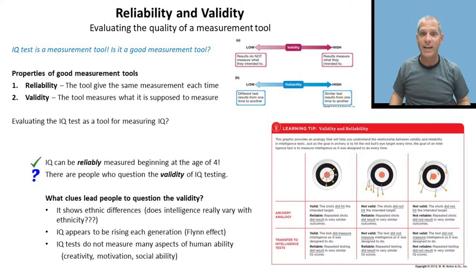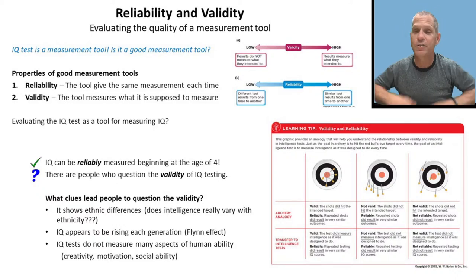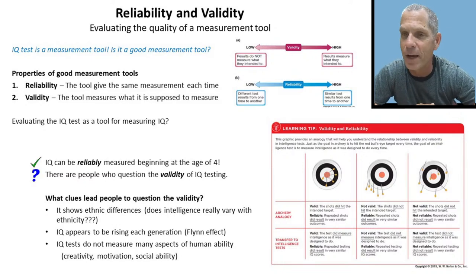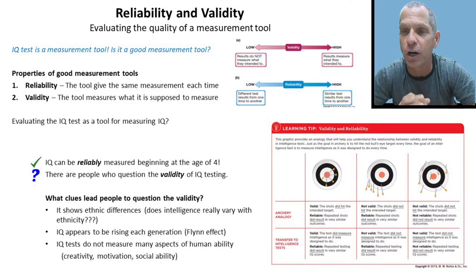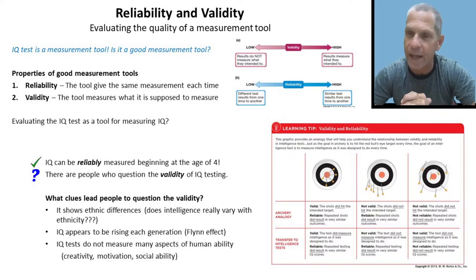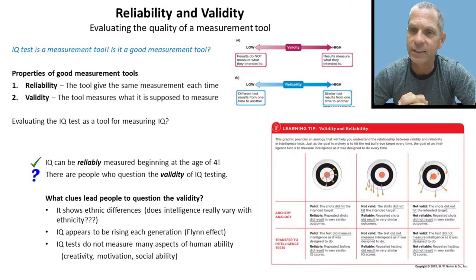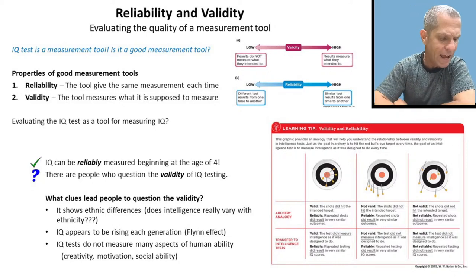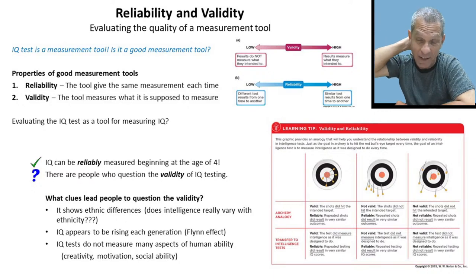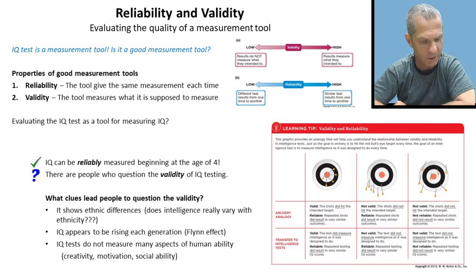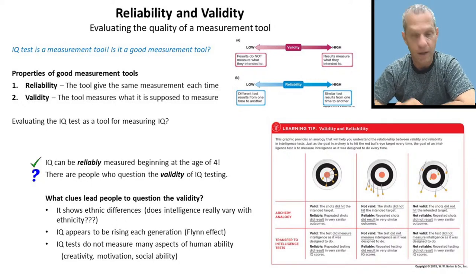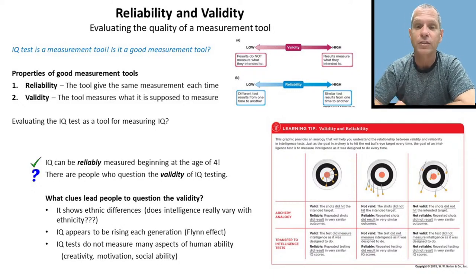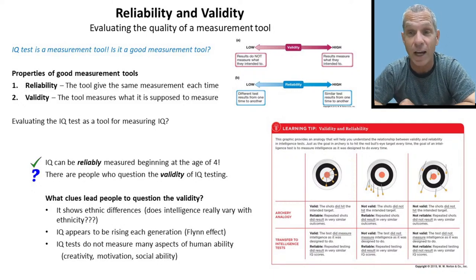Let's evaluate the IQ test on these two qualities. It turns out that IQ test scores, whatever they measure, are extremely reliable beginning at the age of four. If you score in the 86th percentile at age four, you're probably going to be in the 86th percentile at age 14, 24, 34, and 44. IQ tests are extremely reliable.